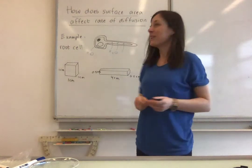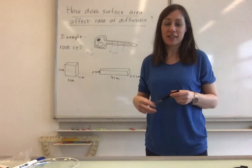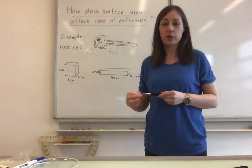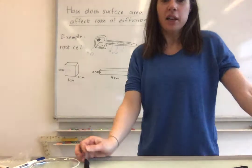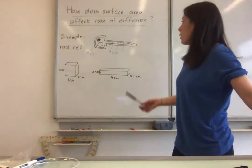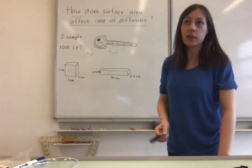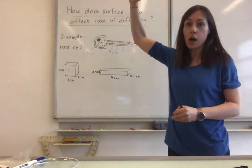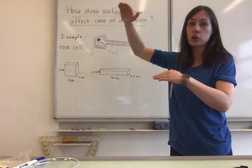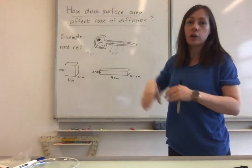Hello and today we are going to have a look at how surface area can affect the rate of diffusion. That's our experiment. So first let's start off with having a look at what is diffusion. Diffusion is the movement of particles from a high concentration to a low concentration down a concentration gradient.